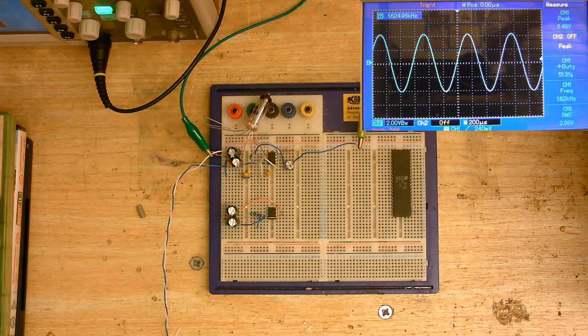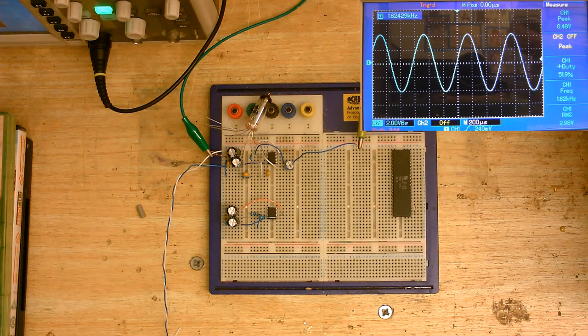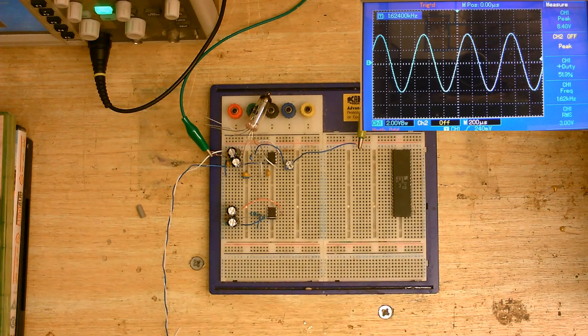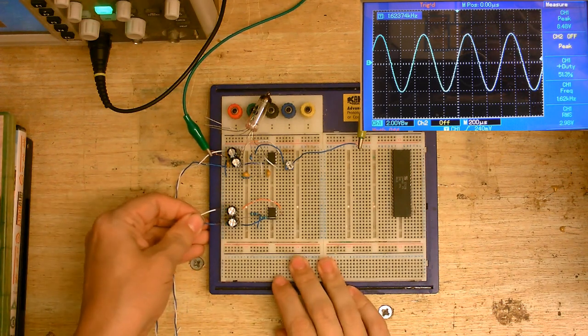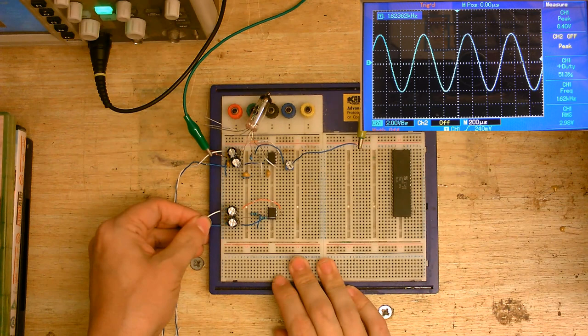So I'm going to power up the oscillator now. I've got it connected to the scope. Let's see if it works. And oh yes, look at that, we've got a nice sine wave. So now this is working, I'm now going to connect up the impedance matching circuit and let's see if it passes a signal.